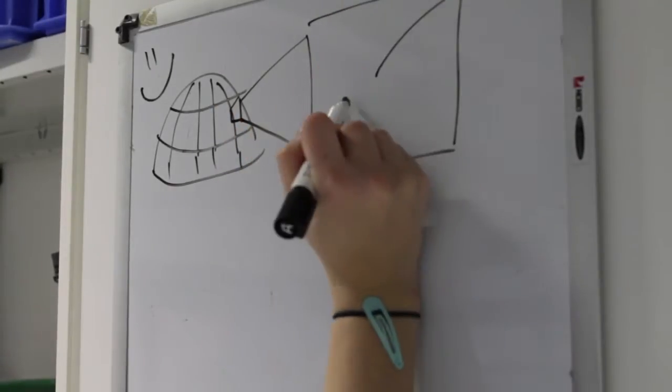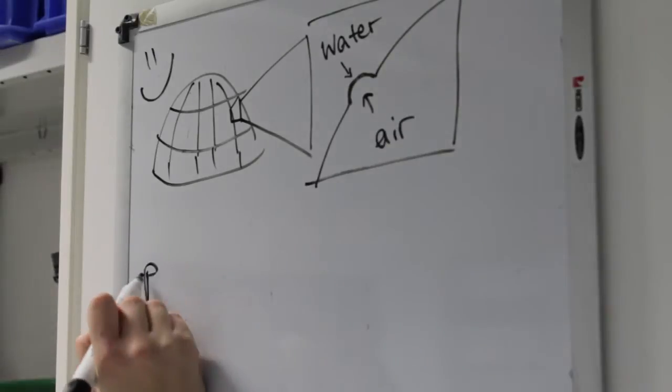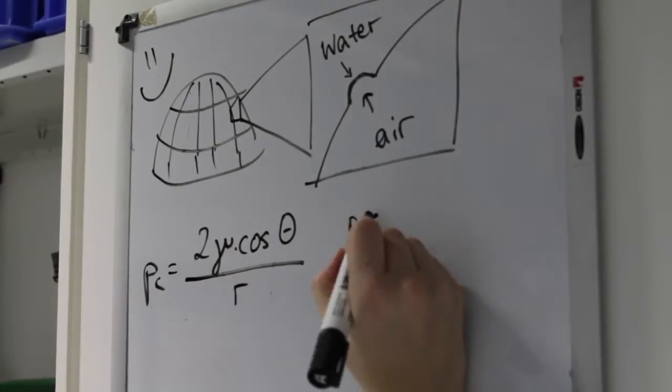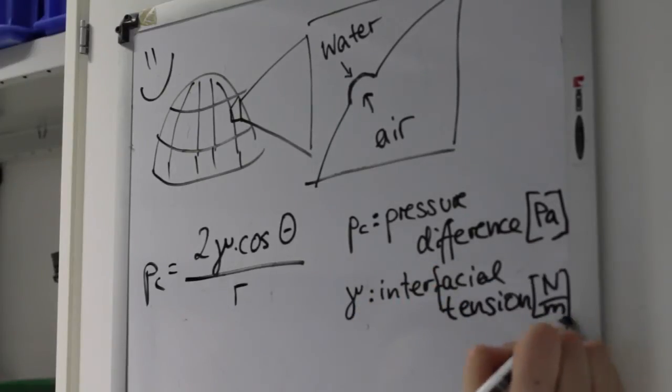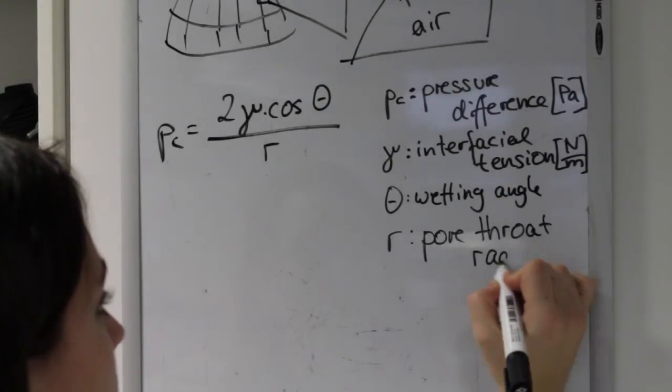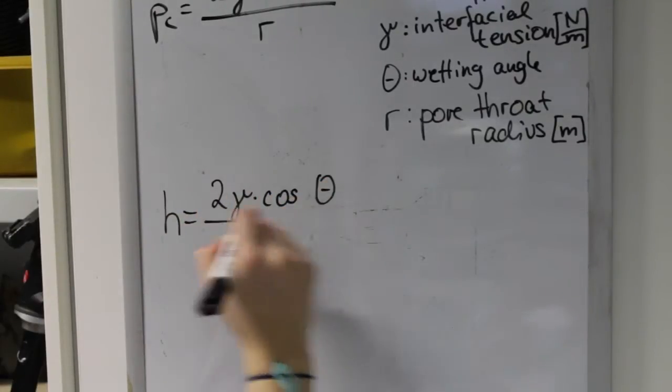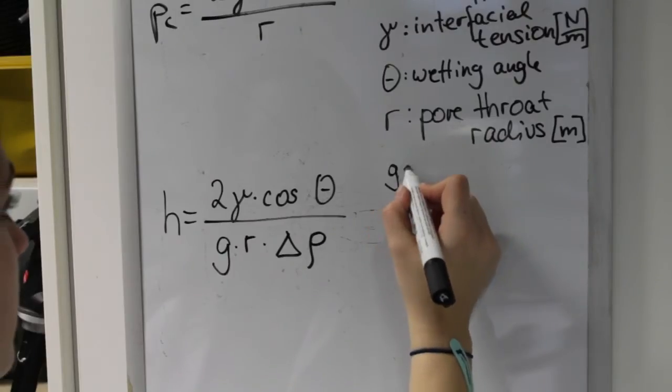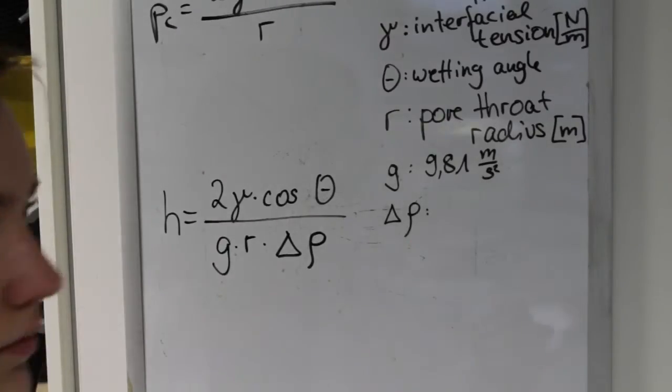In the model of a sieve, the water is over the air, but the air is held back by the capillary pressure in the pore throats. This capillary pressure equals 2 gamma times cosine theta over R. It's also defined as the pressure difference across the fluid-fluid interface. Gamma is the interfacial tension, theta the wetting angle and R is the pore throats radius. The equation for the height of the air column is given by H equals 2 gamma times cosine theta over G times R times delta rho. G is the gravitational constant and delta rho the density difference between water and air.